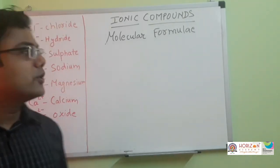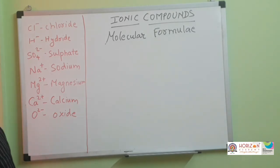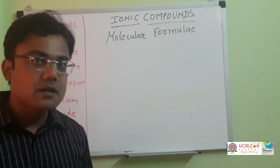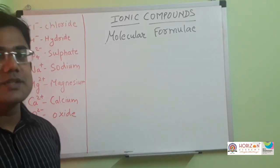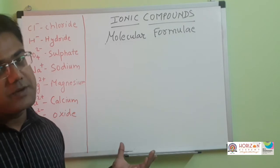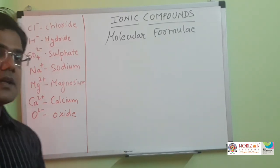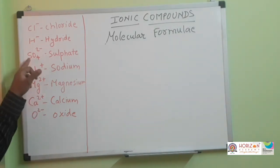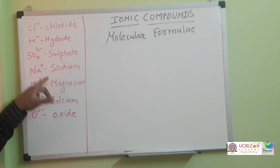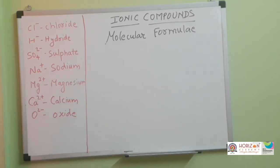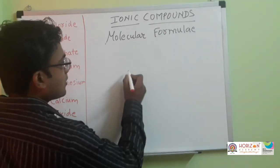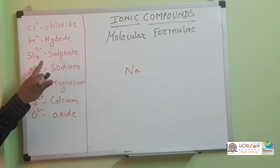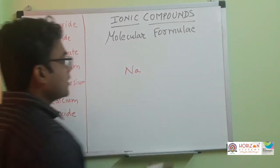Molecular formulae of some compounds were seen in the previous class using the cross multiplication method. This method is specific for ionic compounds. For finding the molecular formula you need to know the name, symbol, and valency of each radical. For example, to find sodium sulfate: take sodium as the basic radical and always write the basic radical on the left side. Then take the acidic radical, sulfate, and write its symbol on the right side.